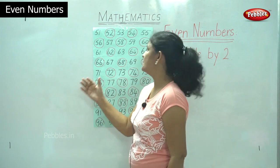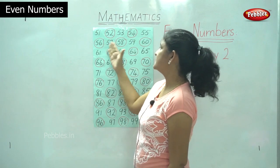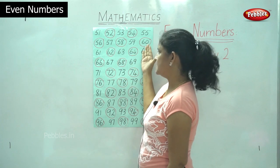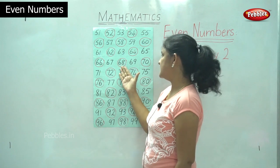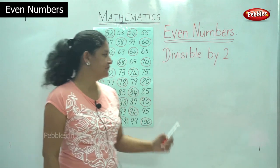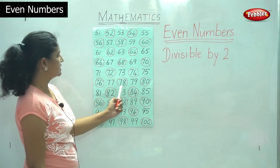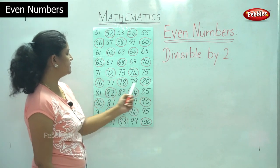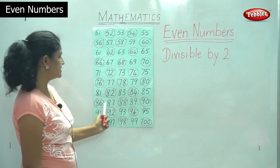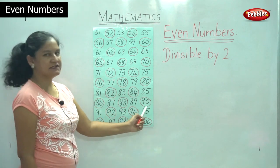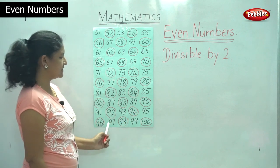So, 52, 54, 56, 58, 60, 62, 64, 66, 68, 70, 72, 74, 76, 78, 80, 82, 84, 86, 88, 90, 92, 94, 96, 98, and 100. These are all the even numbers from 51 to 100.